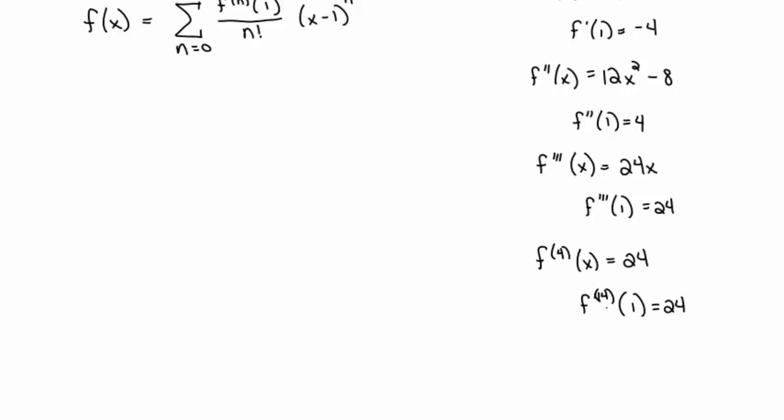And finally, if you take one more, the fifth derivative is going to be zero. Thus, the nth derivative evaluated at one is going to be zero for all n greater than or equal to five. This is just because the derivative for five and on is just going to be zero.